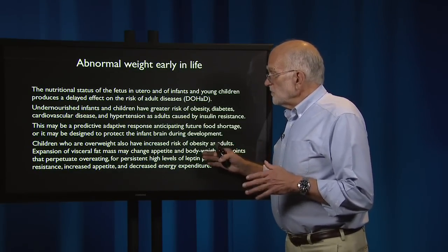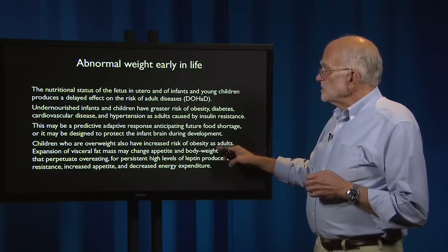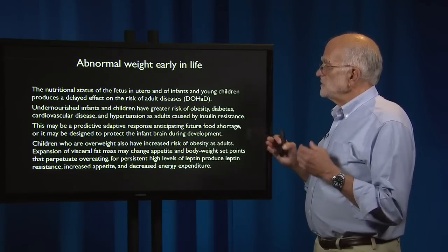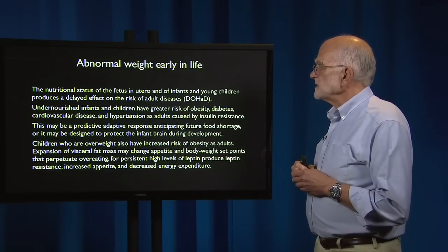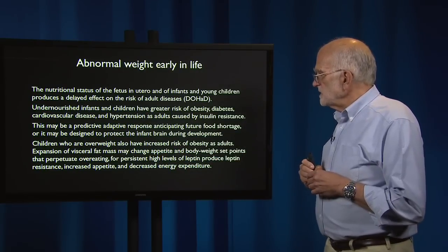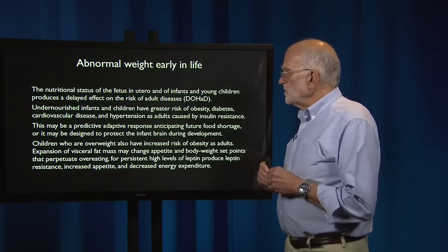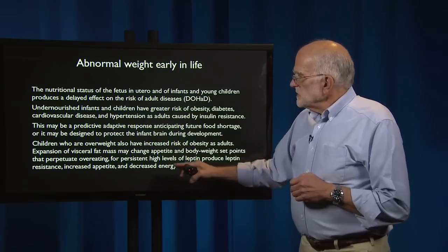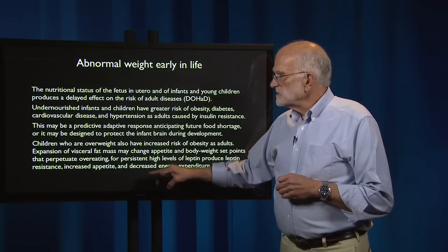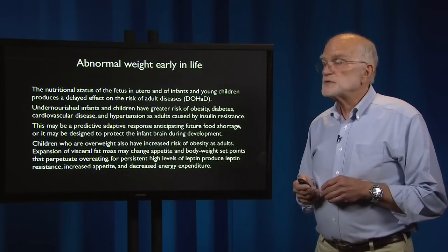Children who are overweight also have an increased risk of obesity as adults. So whether you're too thin or too heavy as a child, you have an increased risk of obesity. The expansion of visceral fat mass may change appetite and body weight set points and perpetuate overeating, because persistent high levels of leptin produce leptin resistance, which in turn produces increased appetite and decreased energy expenditure.